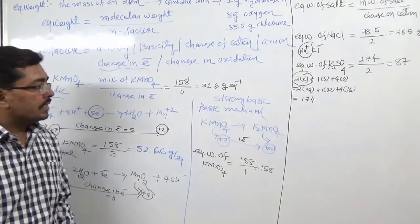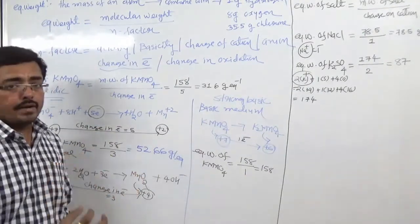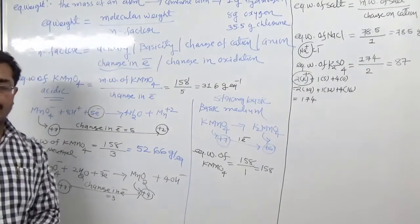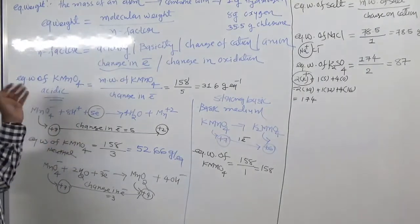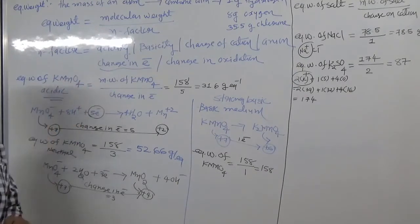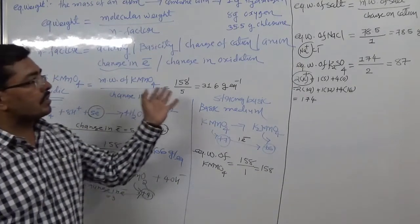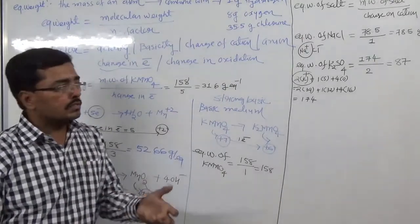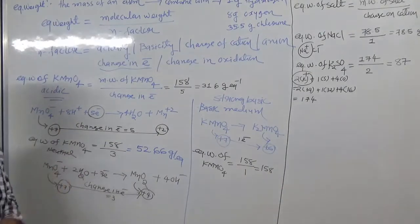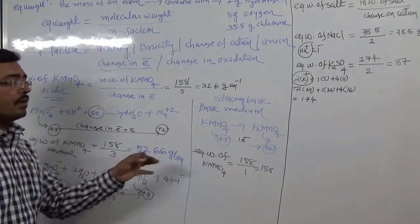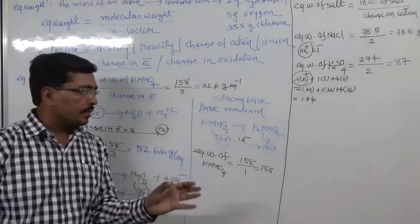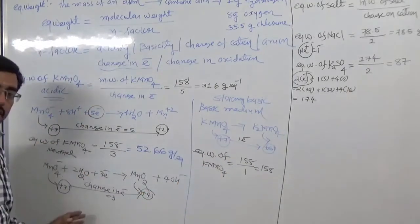To summarize: equivalent weight is found by dividing molecular weight by n-factor. For acids, use basicity; for bases, use acidity; for salts, use charge on cation or anion; for compounds like KMnO₄, use change in electron or oxidation number. For KMnO₄, the change in oxidation number depends on the medium — acidic, neutral, or basic — so equivalent weight will be different in each case.